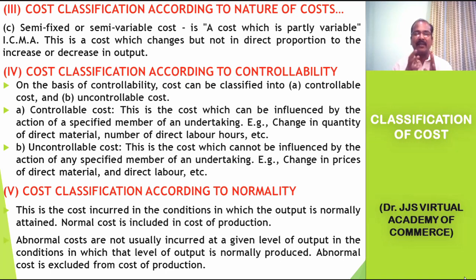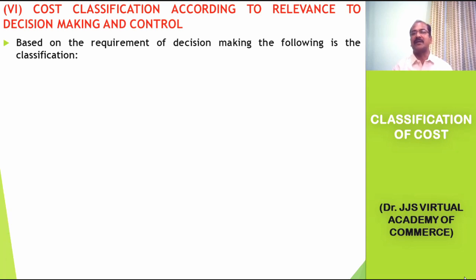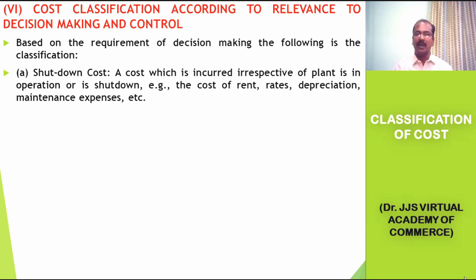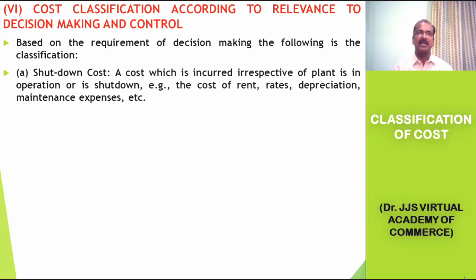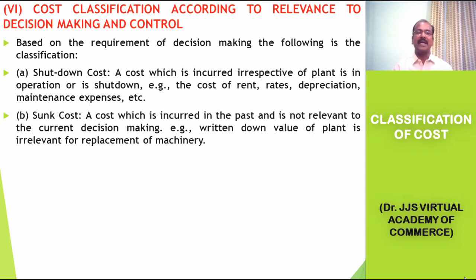The next classification is according to relevance to decision making and control. The first type is shutdown cost, which is a cost incurred irrespective of whether the plant is in operation or shut down. For example, if the government orders an organization to shut down for a particular period, production cannot take place. However, certain expenses such as rent and depreciation still need to be met. That expenditure is known as shutdown cost.